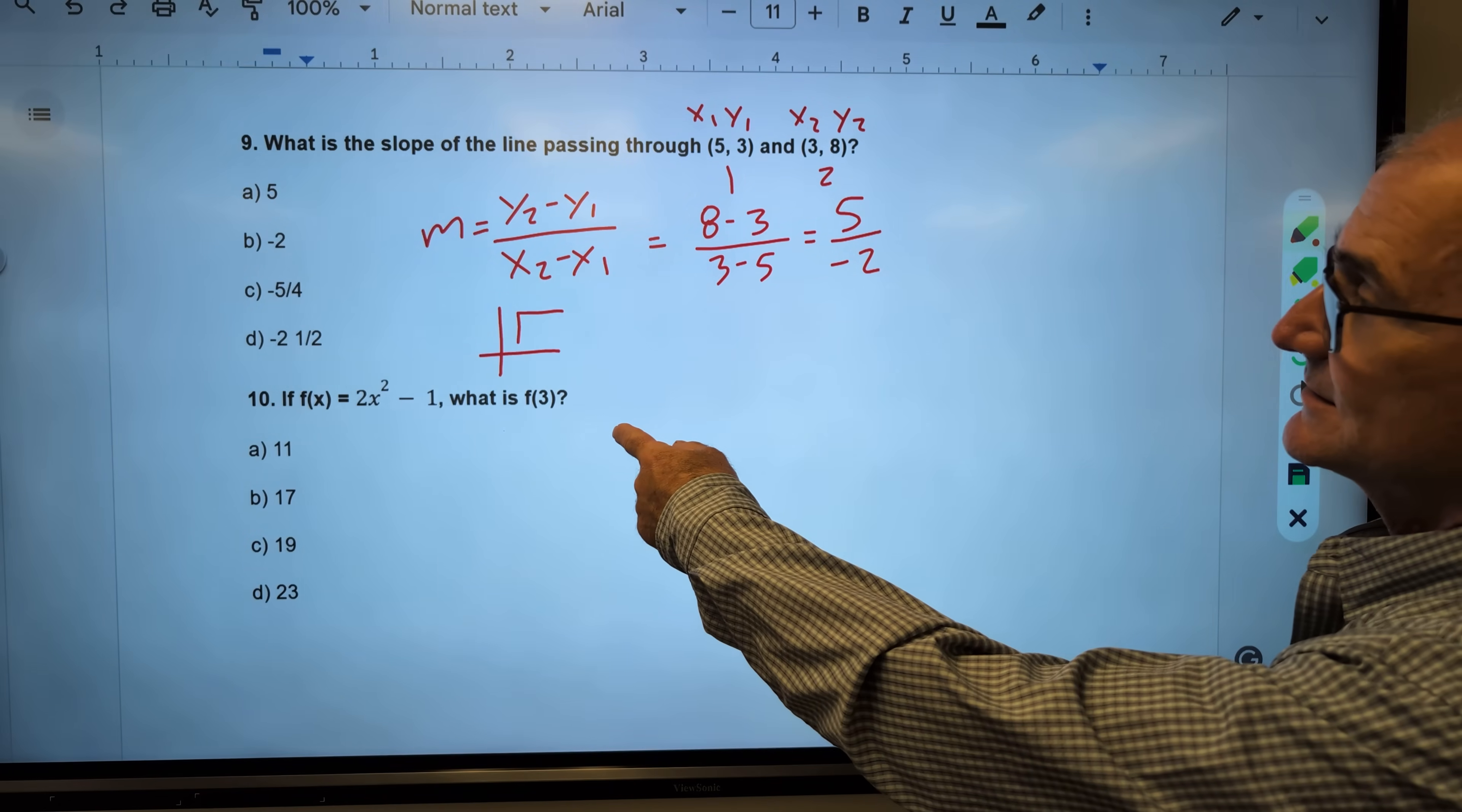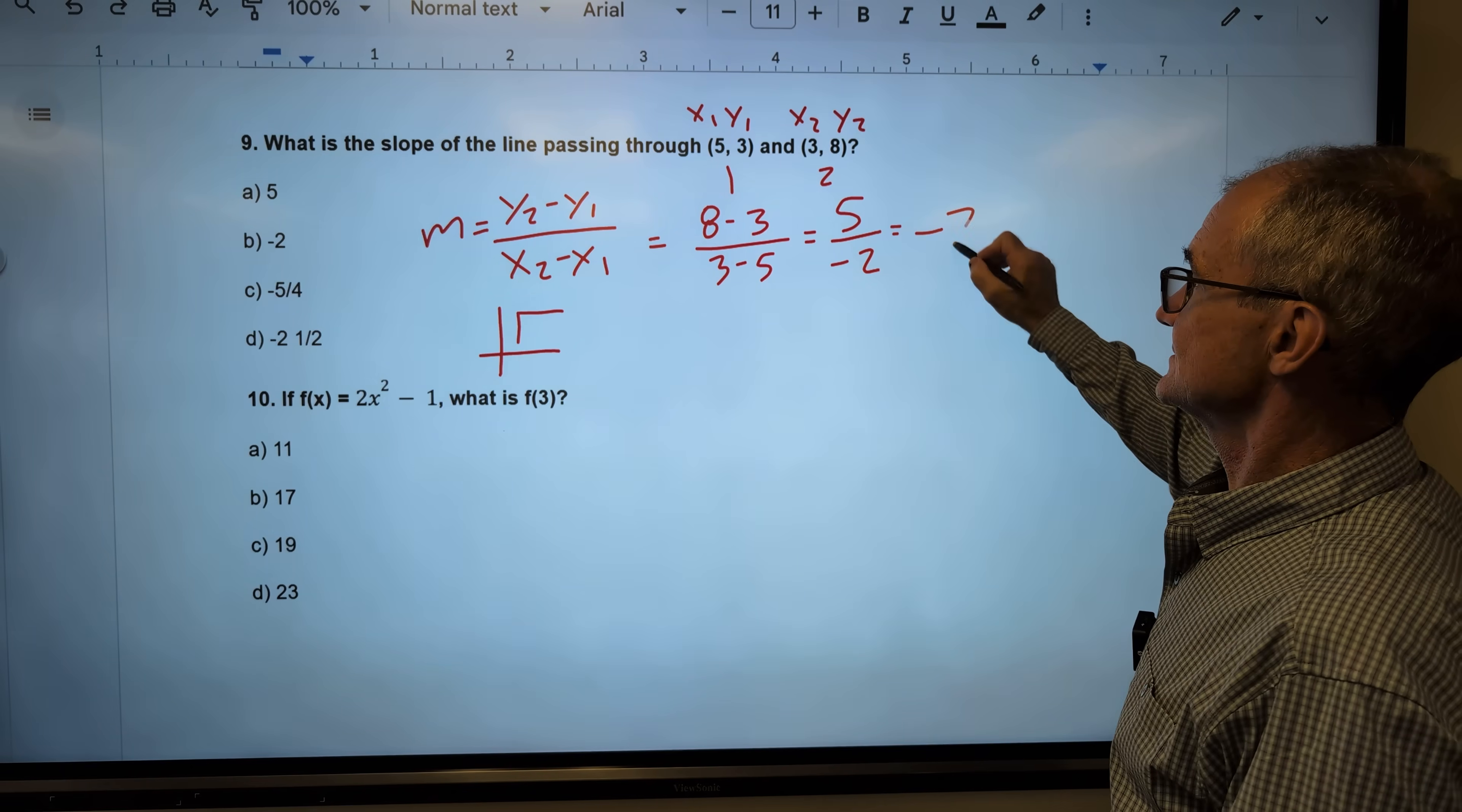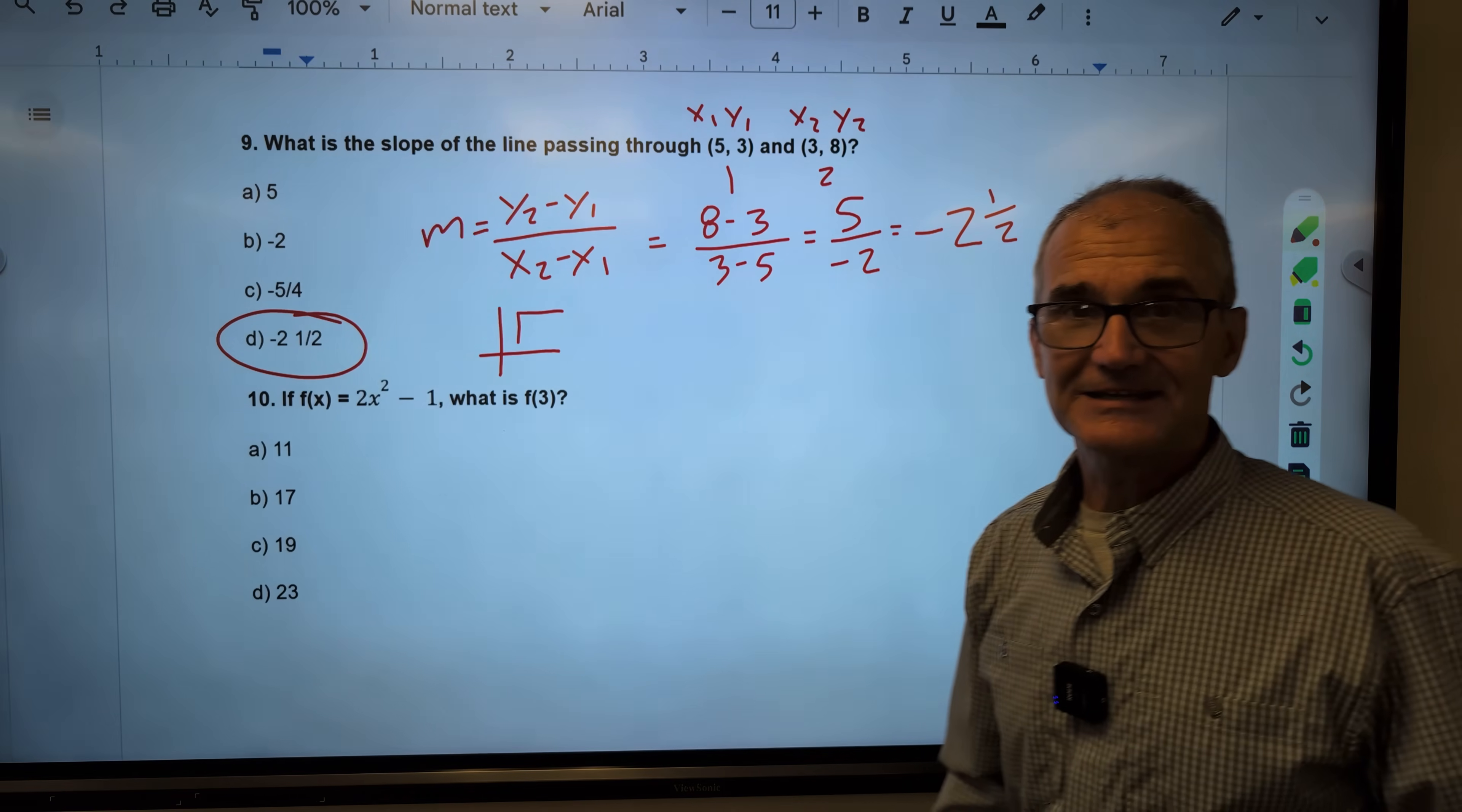There is no negative 5 halves. So I'm going to have to reduce this. I'm going to pull that negative out front. 2 goes into 5 two times with 1 left over. So negative 5 over 2 is the same as negative 2 halves. Correct answer, answer D right here.